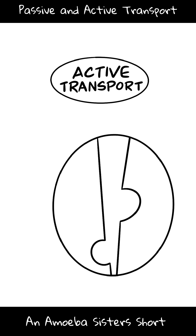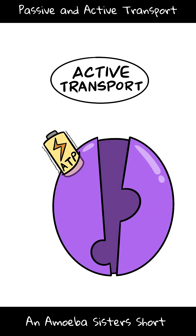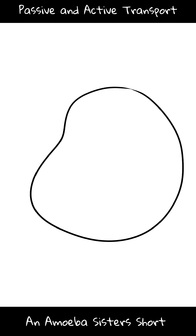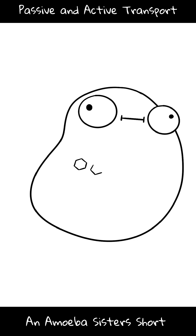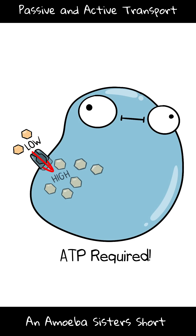Active transport uses ATP to move substances against their gradient. For example, a cell could use active transport to help move glucose from a low concentration to high concentration, which is against the gradient.